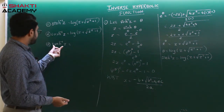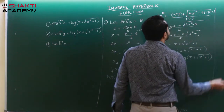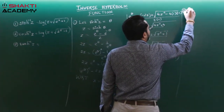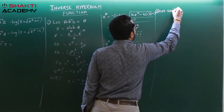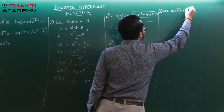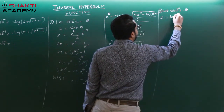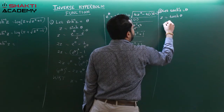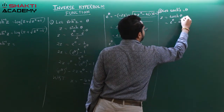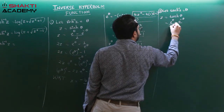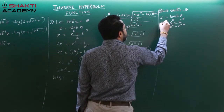Now the remaining one is tanh hyperbolic inverse. Let tanh⁻¹(z) = theta, so z = tanh(theta). The formula for tanh(theta) is (e^theta minus e^(-theta)) divided by (e^theta plus e^(-theta)). This equals z.